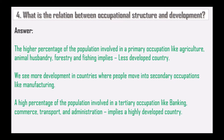What is the relation between occupational structure and development? A higher percentage of population involved in primary occupations like agriculture, animal husbandry, forestry and fishing implies less developed countries. More development is seen where people move into secondary occupations like manufacturing. A higher percentage in tertiary occupations like banking, commerce, transport and administration indicates highly developed countries.